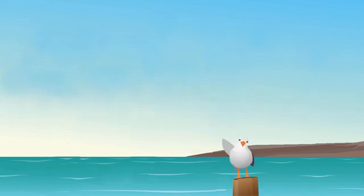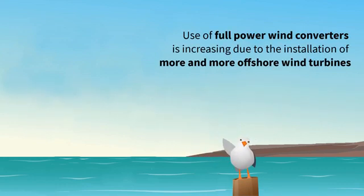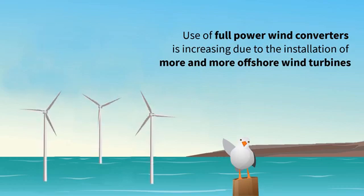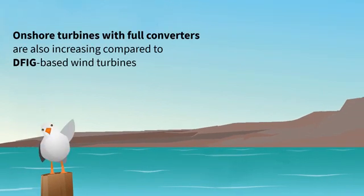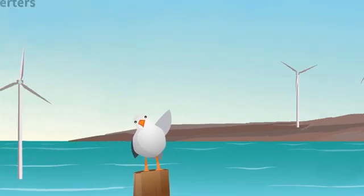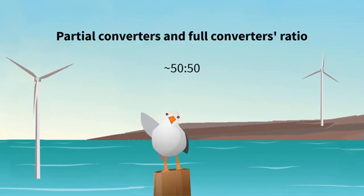Did you know that the use of full power wind converters is increasing due to the installation of more and more offshore wind turbines? At the same time, onshore turbines with full converters are also increasing compared to DFIG based wind turbines. This makes the ratio between partial and full converters change to roughly 50-50.